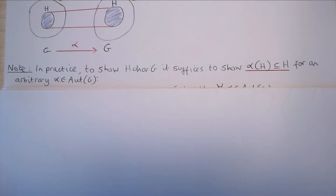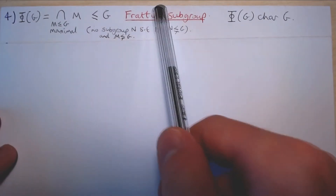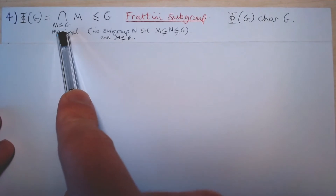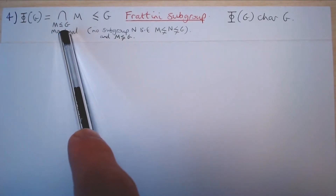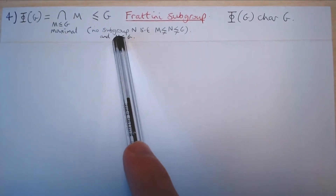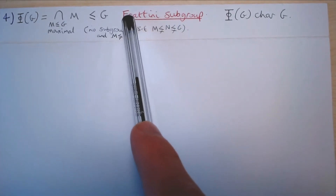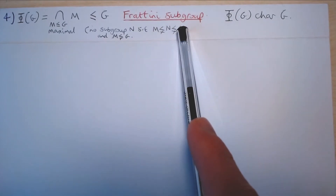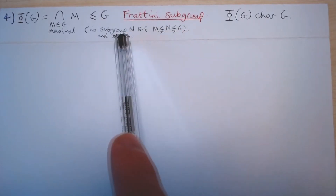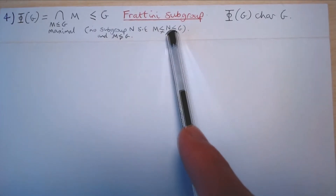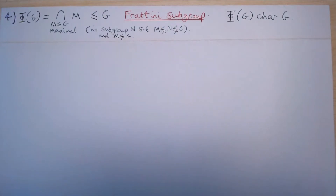We define the Frattini subgroup of a group G to be the intersection of all maximal subgroups of G, where M is a maximal subgroup of G if it is a proper subgroup of G such that there exists no subgroup N of G with N a proper subgroup of G and M a proper subgroup of N. Another way of saying this: M does not equal G, and whenever there is a subgroup N of G such that M is a subgroup of N, we must have that either N equals M or N equals G.